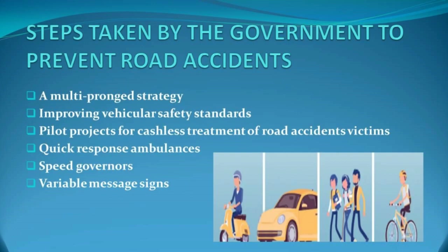Steps taken by the government to prevent road accidents: The Ministry of Road Transport has adopted a multi-pronged strategy based on four E's — Engineering, Enforcement, Education, and Emergency Care — for ensuring road safety. Vehicular safety standards have been improved; trucks are prohibited from carrying protruding rods and anti-locking brake systems are mandatory on heavy vehicles. Pilot projects for cashless treatment of road accident victims have been implemented on National Highways 8 and 33, and are proposed for the Golden Quadrilateral north-south and east-west corridors. Quick response ambulances are parked every 50 km on national highways by the National Highway Authority of India. A 24x7 call centre has been created to receive calls for ambulances, with training given for providing first aid to road safety volunteers.